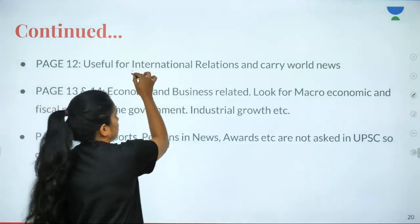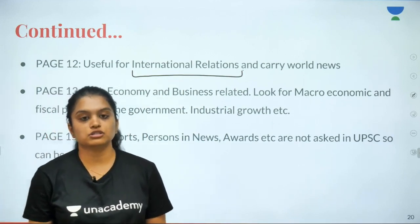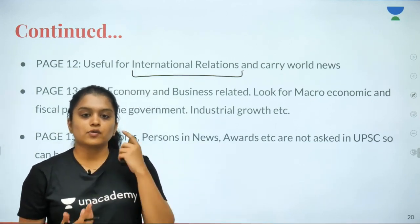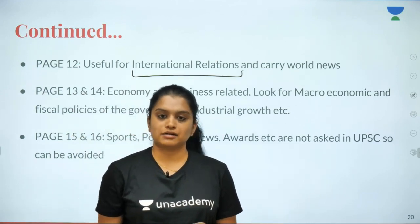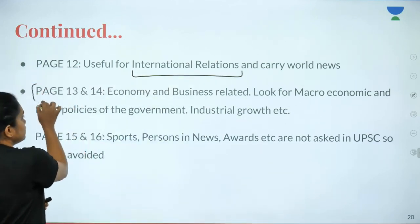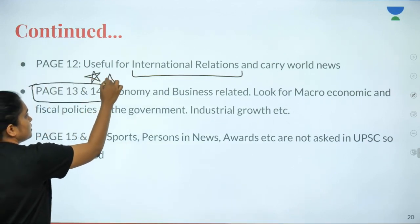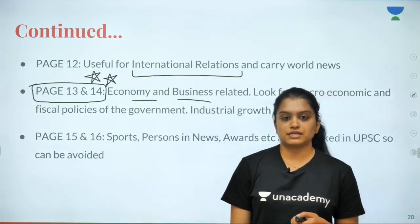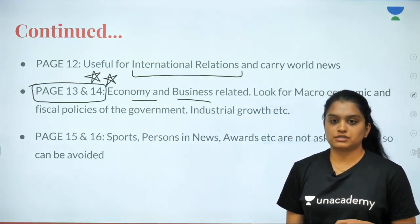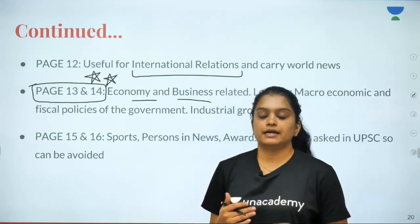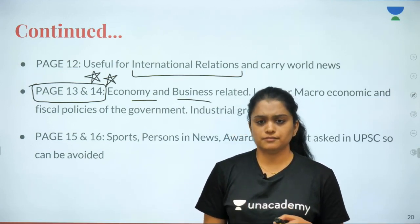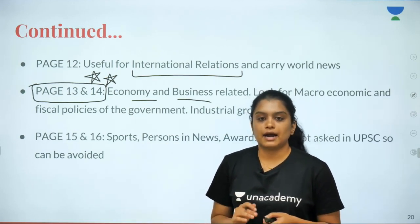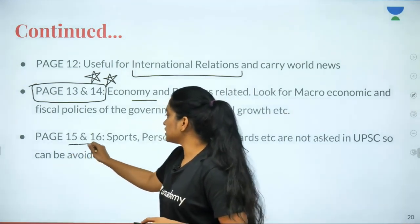So the important pages till now are 7, 8, and 9 — only three important pages. Page 12 carries news related to International Relations; however, since developments in international relations happen at a very slow pace, you can either read this or read a current affairs magazine — the effect would be the same. Pages 13 and 14 are generally neglected by most aspirants, but they carry news related to economy and business — macroeconomic and fiscal policies, industrial growth, the textile industry, agricultural growth, India's exports, and monetary policy. These pages must be given adequate importance.